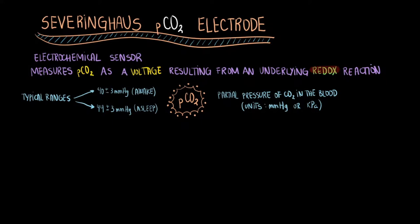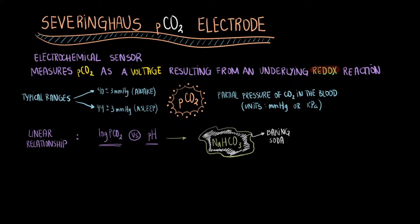In the Severinghaus electrode, a linear relationship between the log of PCO2 and pH is used to determine the partial pressure of CO2 in the blood. This is performed using a saturated solution of sodium bicarbonate, or NaHCO3, that is, baking soda.